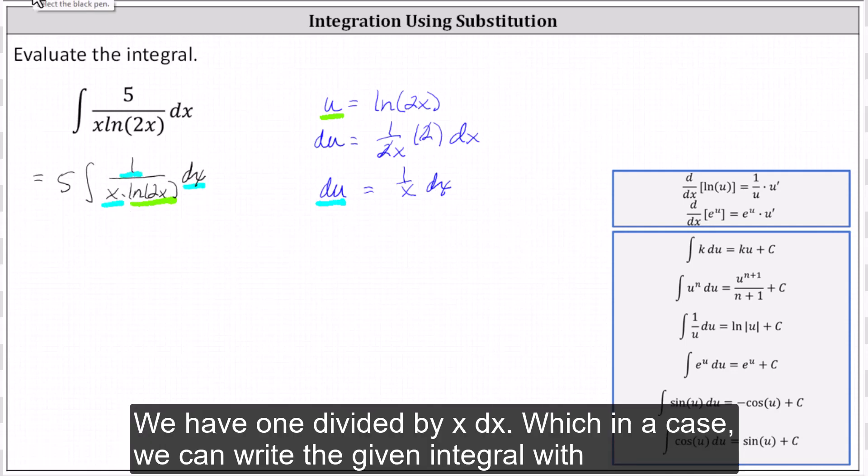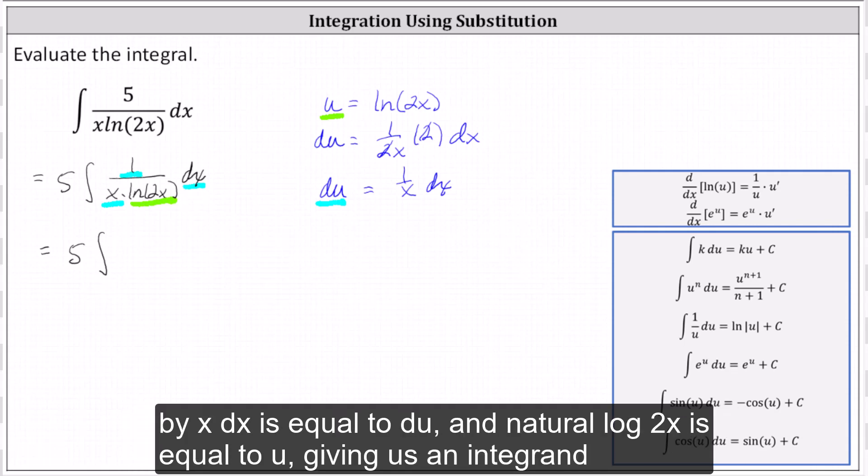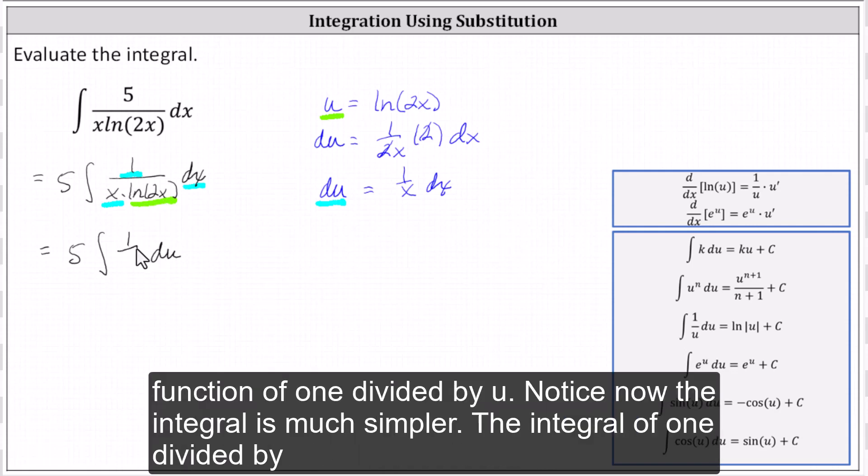We have one divided by x dx, which indicates we can write the given integral with respect to u as five times the integral of, again, one divided by x dx is equal to du, and natural log 2x is equal to u, giving us an integrand function of one divided by u.